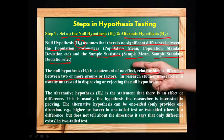In research studies, a researcher is usually interested in disapproving or rejecting the null hypothesis. The researcher wants to reject the null hypothesis. The alternate hypothesis is represented by H1 or HA, and it is the statement that there is an effect or difference.